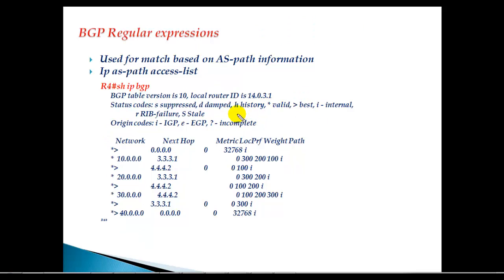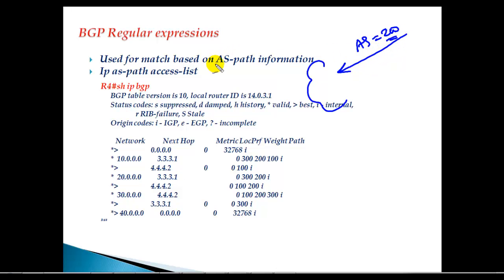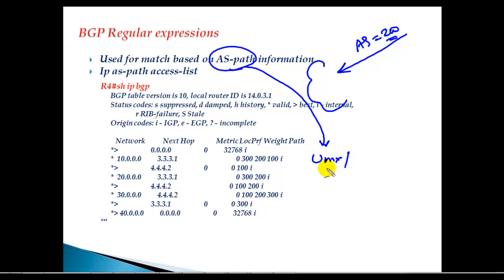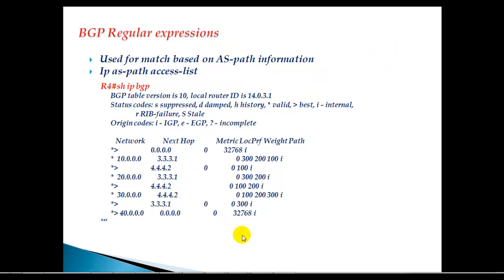This is a very useful concept. You may have a requirement where you want to match all the networks coming from AS200, but you are not aware of exactly what networks belong to AS200. In that case, you can use BGP regular expressions to match the prefixes based on the autonomous system path information. It uses a string of special characters commonly found in Unix or Windows environments to search and find patterns.